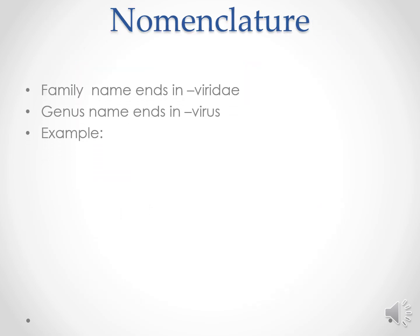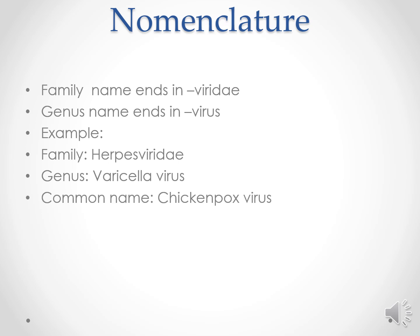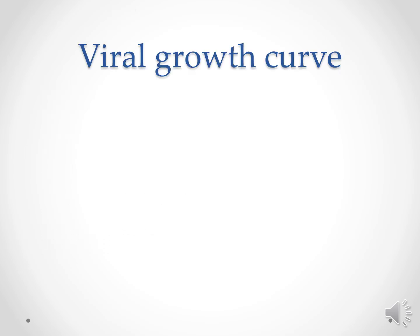Now the nomenclature. Virus families are named ending in Viridae. The genus is named as virus. For example, Herpesviridae is the family name. The genus is Varicellavirus. The common name is chickenpox virus, and the disease caused is chickenpox.